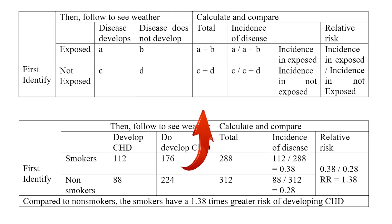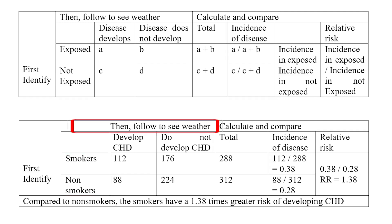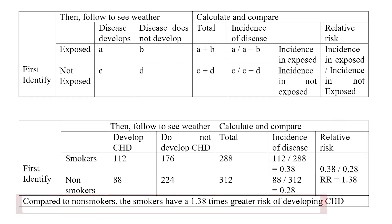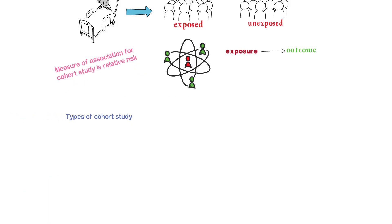If we put the data in the above table, we get smokers and non-smokers and follow to see whether coronary heart disease occurs or not. The incidence of disease in smokers and non-smokers is calculated. The relative risk is calculated by the formula, which is 1.38. So it is clear that compared to non-smokers, smokers have a 1.38 times greater risk of developing coronary heart disease.